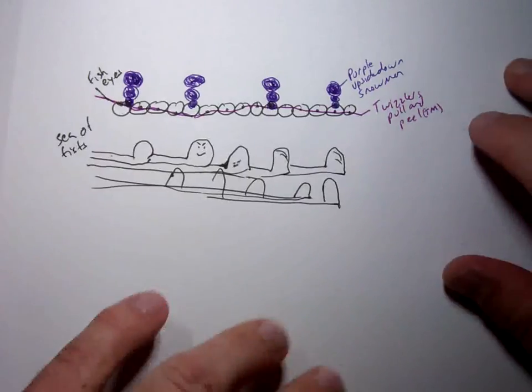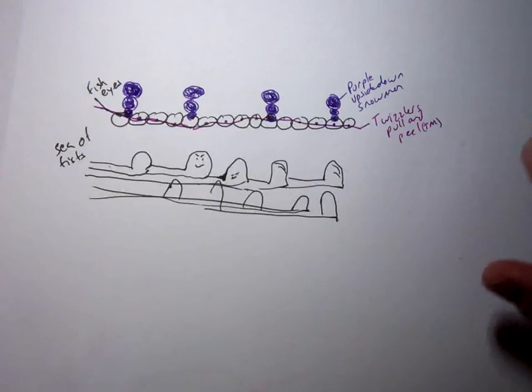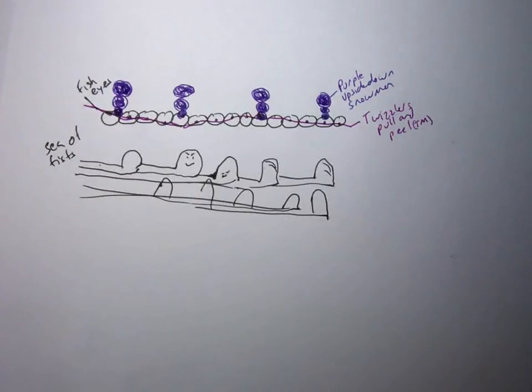Now. All is good and right in this magical kingdom until the snowmen get distracted. And there's one thing that distracts snowmen more than anything else. And that's magical cranberries.